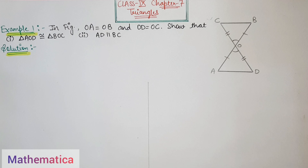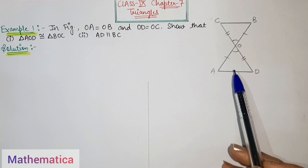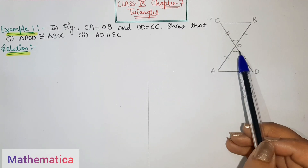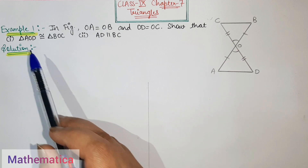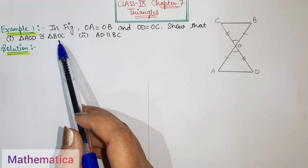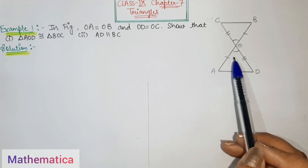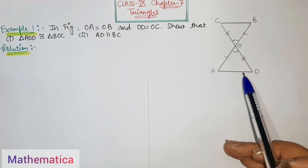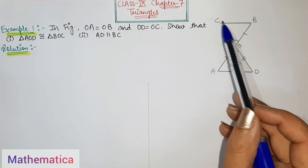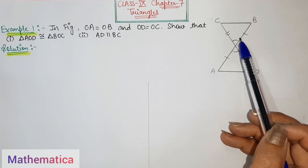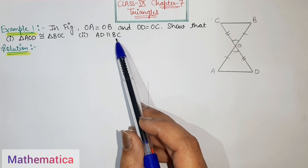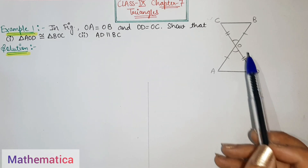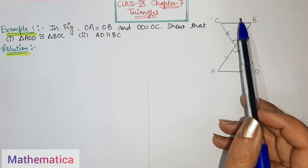And OD equals OC. In this figure we have to show that triangle AOD is congruent to triangle BOC — this triangle is congruent to this triangle. Secondly, we have to show that AD is parallel to BC — this is AD which is parallel to BC, and we have to prove this.